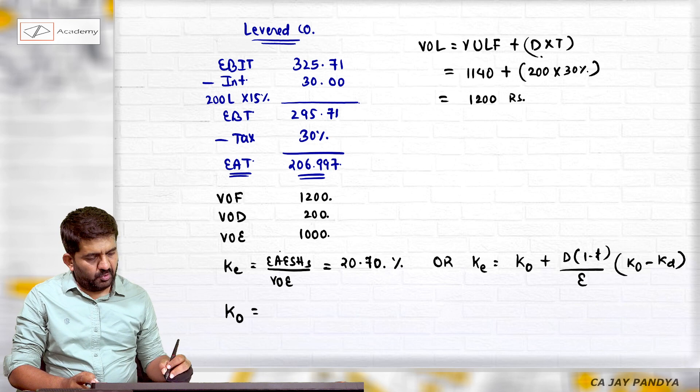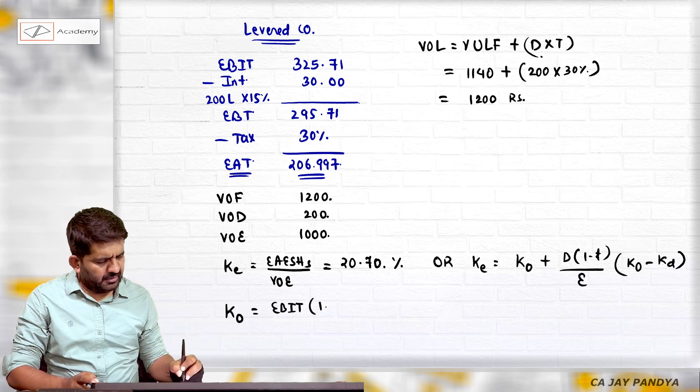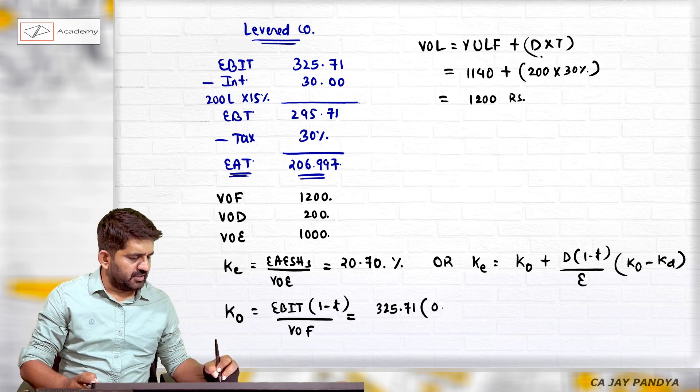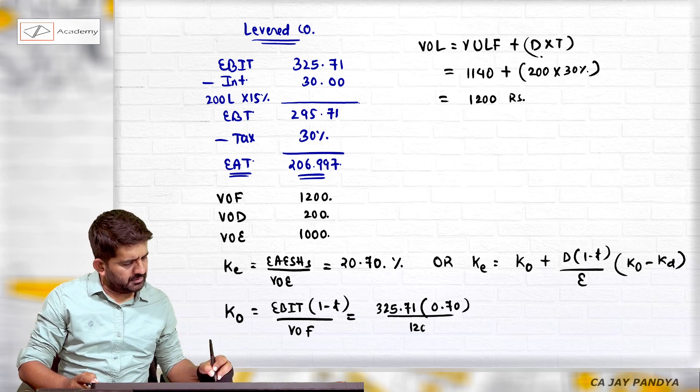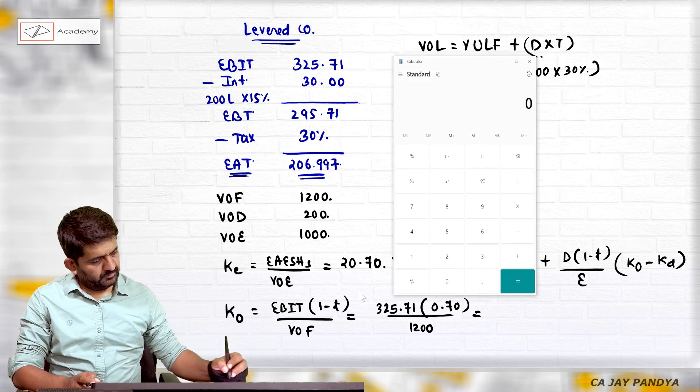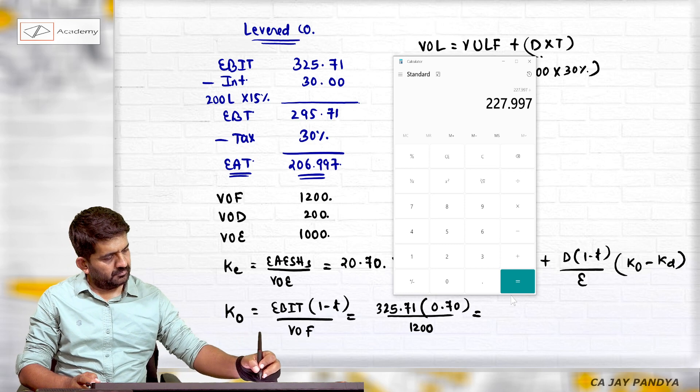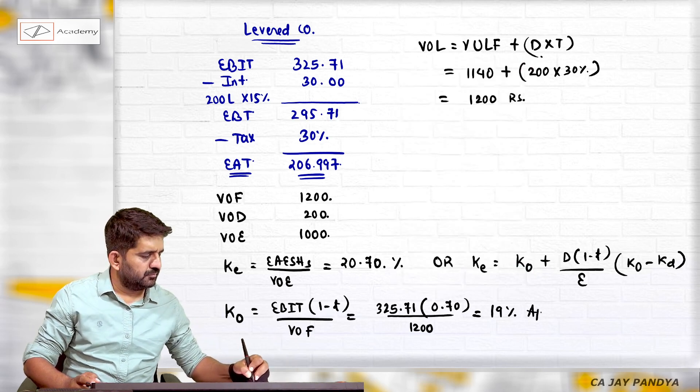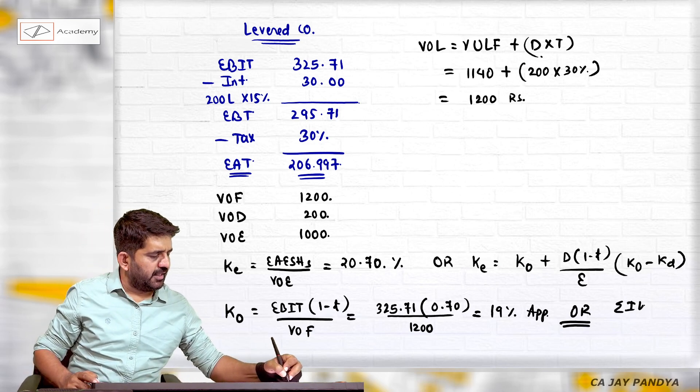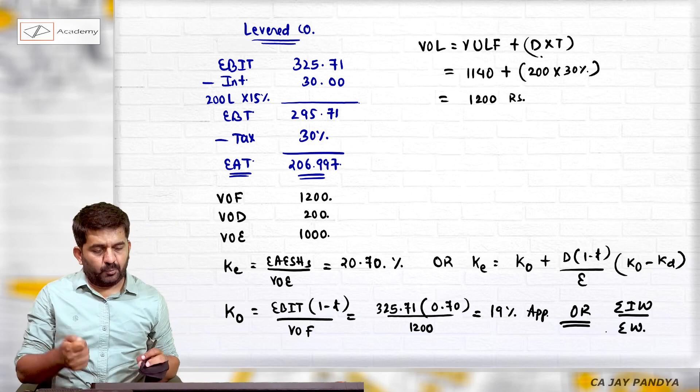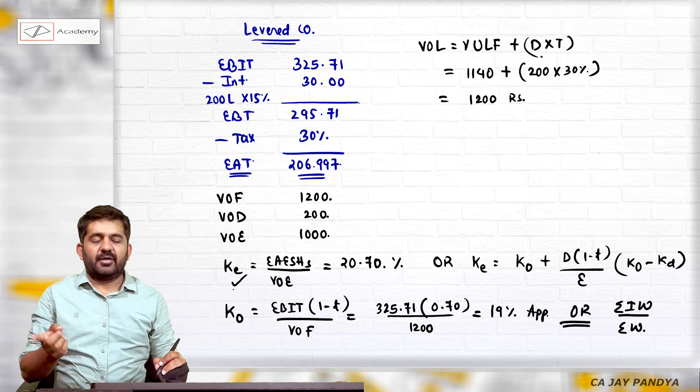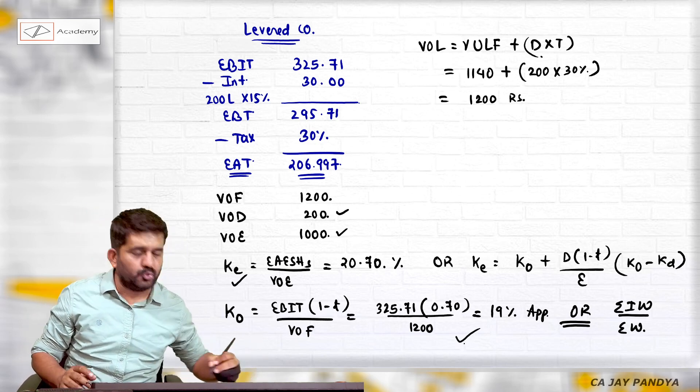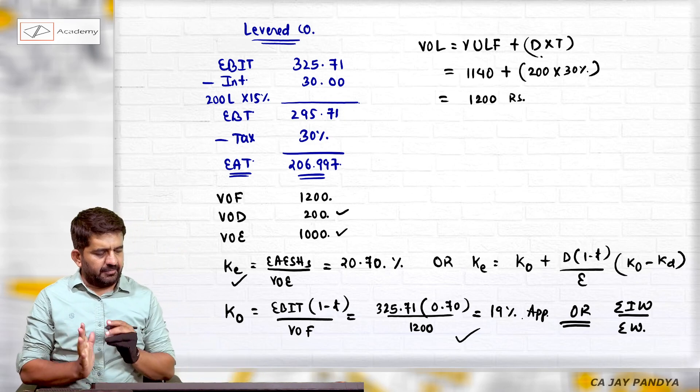I can find out ko. Ko is EBIT into 1 minus t upon value of firm. EBIT is 325.71, 1 minus t will be 0.70, upon value of firm is 1200, which is 19 percent. What is another method? Method of finding it out is the sigma i w divided by sigma w. We will be having post kd 15 percent into 1 minus t. We are having ke. Write down the weights of equity and debt. Find out sigma i w divided by sigma w. In all such cases, this answer would be given, but this is absolutely shortcut correct answer which is 19 percent, which is nothing but ko.